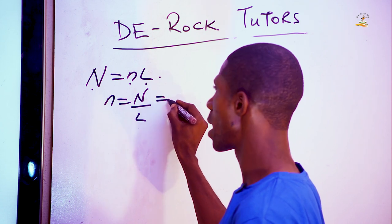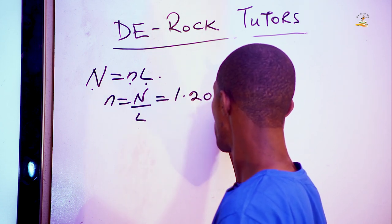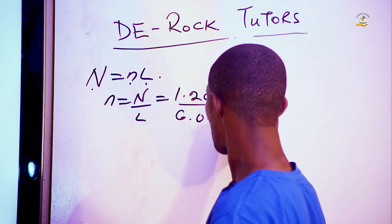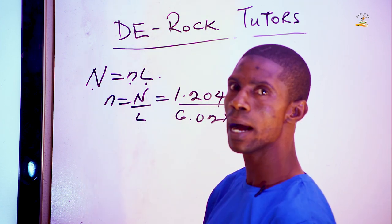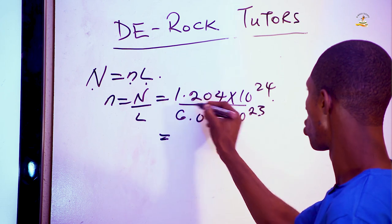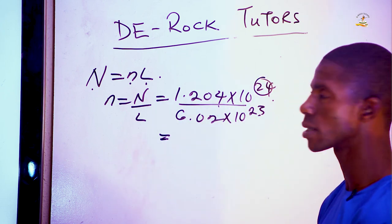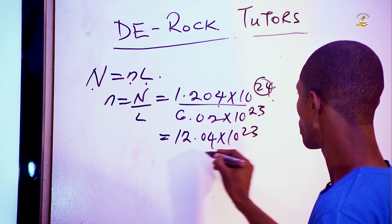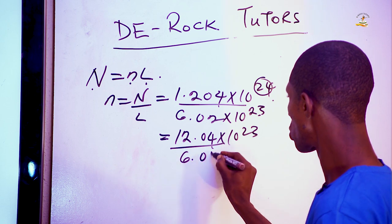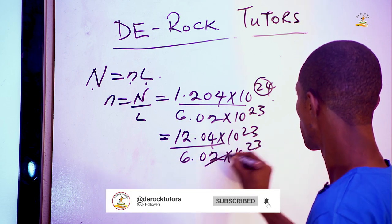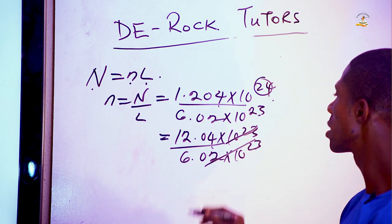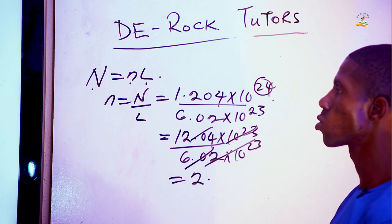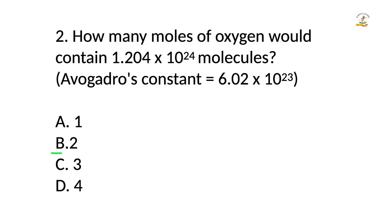Substituting, we have 1.204 × 10²⁴ over 6.02 × 10²³. Taking 10 out, that becomes 12.04 × 10²³ divided by 6.02 × 10²³. The powers of 10 cancel, and 6.02 goes into 12.04 exactly 2 times. So the answer to that question is B, which is 2 moles.